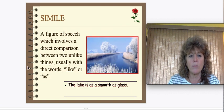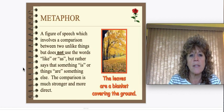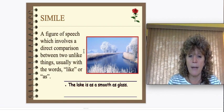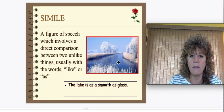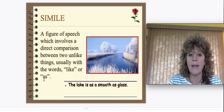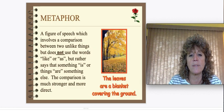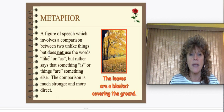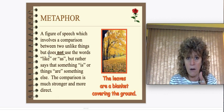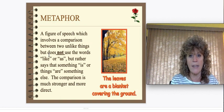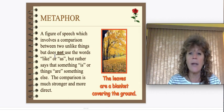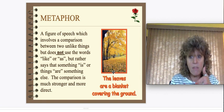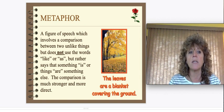Here are some things we've already learned that I just want to touch on again. A simile is a figure of speech involving a direct comparison between two unlike things, usually using like or as. For example: "The lake is as smooth as glass" — you're comparing the lake to glass using as. The opposite is a metaphor — a figure of speech comparing two things without using like or as. Instead it says something is something else. Example: "The leaves are a blanket covering the ground." You're not saying the leaves are like a blanket — you're saying they are a blanket. That's metaphor.